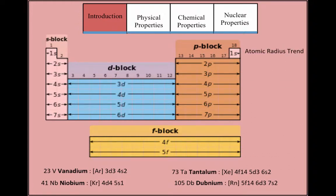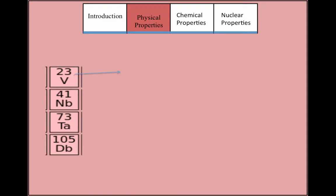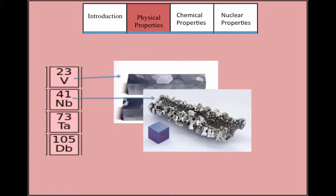All three elements except for dubnium increase in atomic radius as you go down the group. All the elements - vanadium, niobium, and tantalum - except for dubnium occur naturally on Earth and are solid refractory elements under standard conditions.